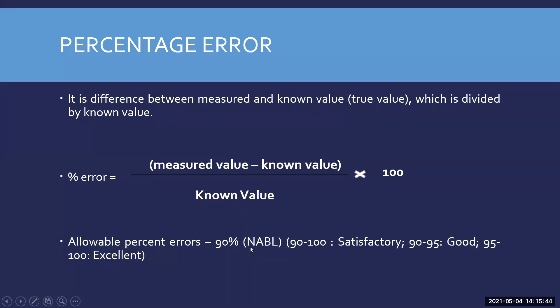Now let us look at allowable percentage errors given by governing bodies. NABL gives a guideline of 90 percent accuracy, meaning 10 percent error is allowed. If you get a value anywhere between 90 to 100, it is satisfactory. A value between 90 to 95 is considered very good, and between 95 to 100 it is considered excellent.